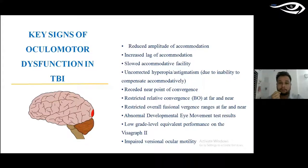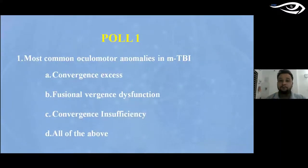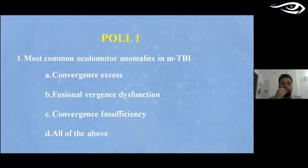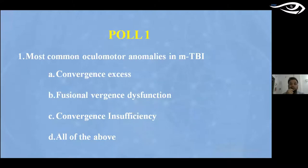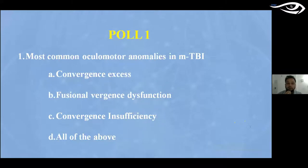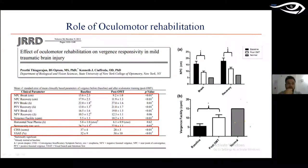After the oculomotor section, a poll was conducted asking about the most common oculomotor anomaly following mild TBI. Almost all participants correctly identified convergence insufficiency as the most common oculomotor anomaly in mild TBI populations. Accommodative insufficiency was also noted but was not included in the options.